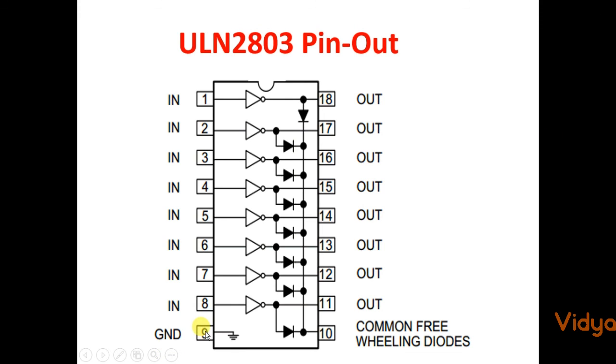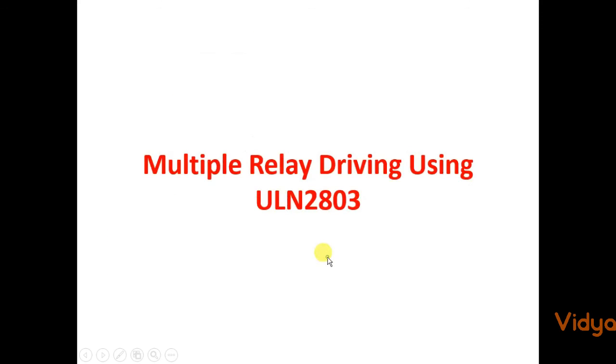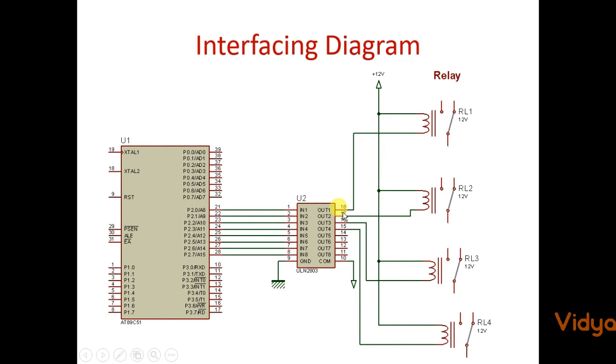So this is the standard pinout of the ULN IC. Pin number 9 has to be connected to ground. Pin number 1 to 8 are inputs which can be given to the microcontroller, and pin number 18 to 11 are the outputs which can be connected to the loads.